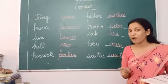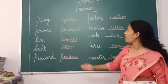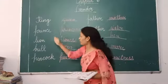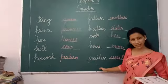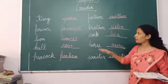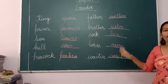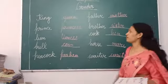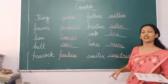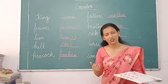So now you have understood. The words which are male are known as masculine gender, and the words which are female are known as feminine gender. The feminine gender words are: queen, princess, lioness, peahen, mother, sister, hen, mare. The masculine gender words are: king, prince, lion, bull, peacock, father, brother, cock, horse. All these masculine gender words belong to the he group.